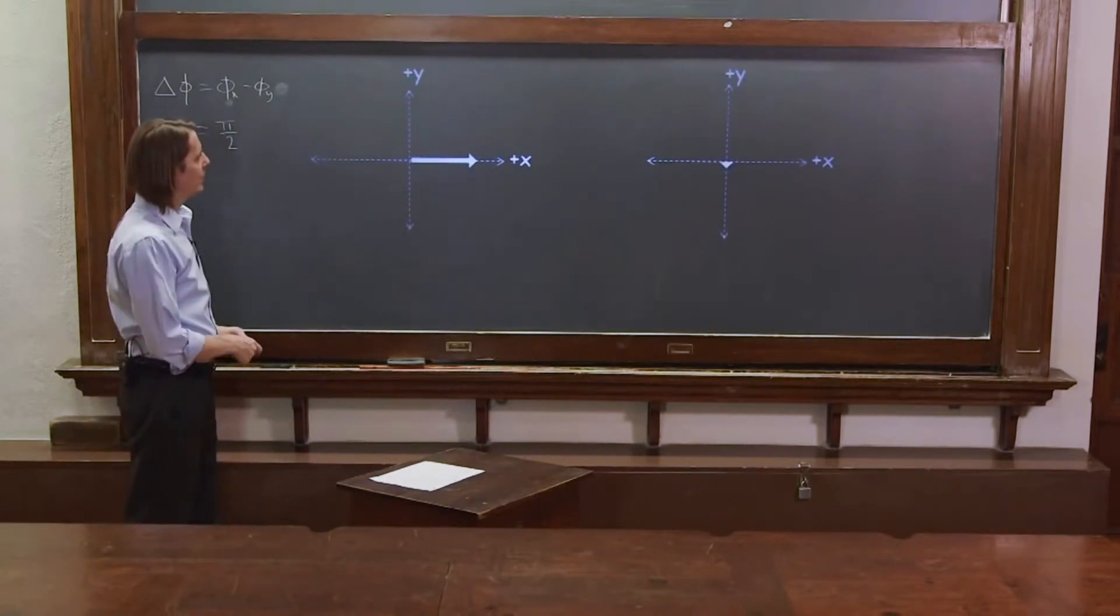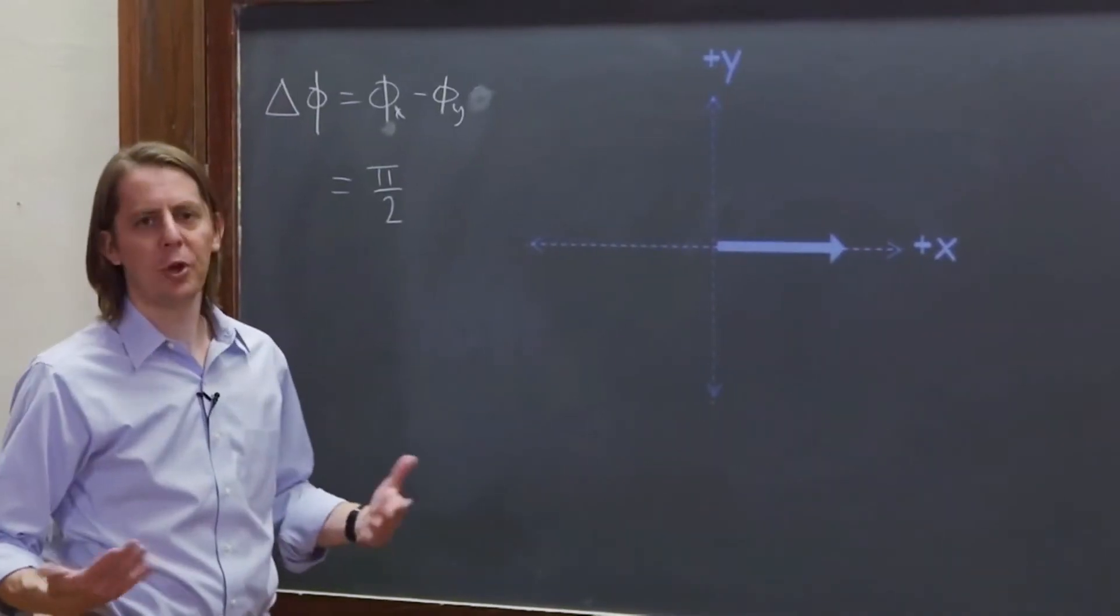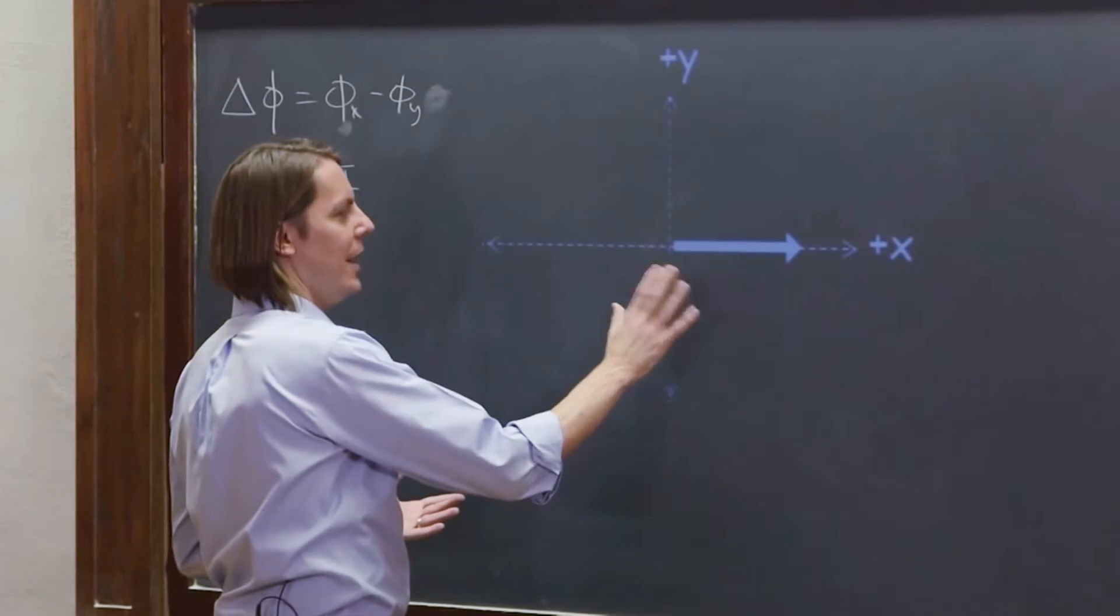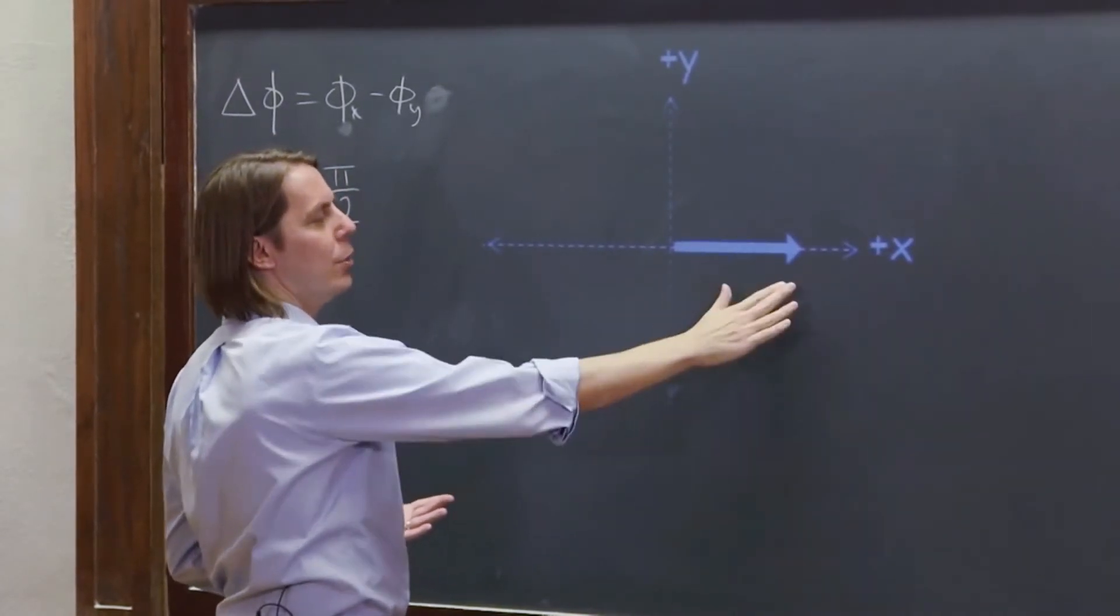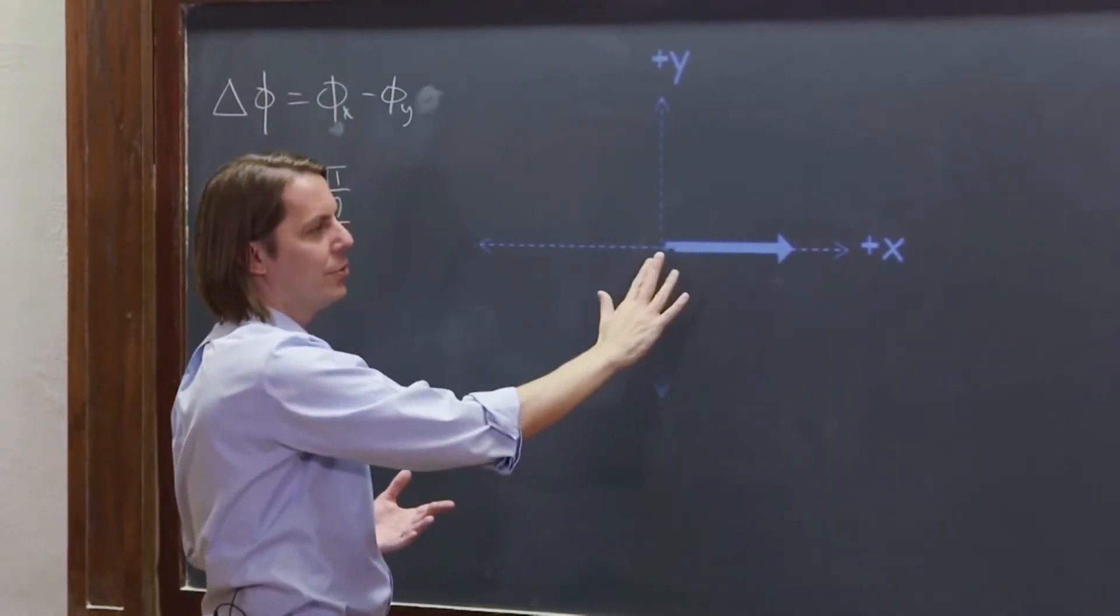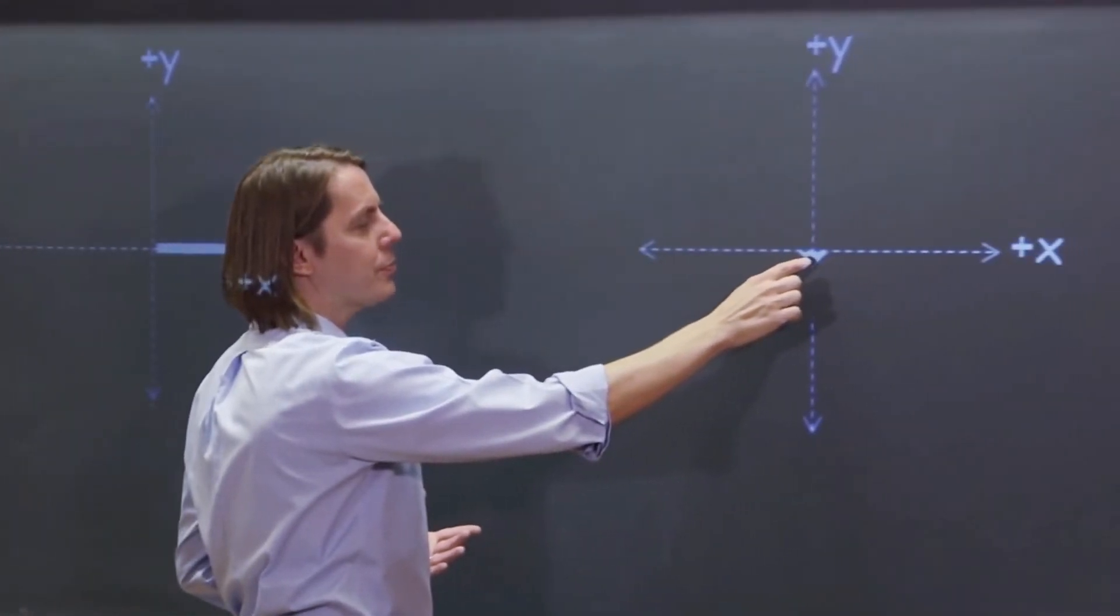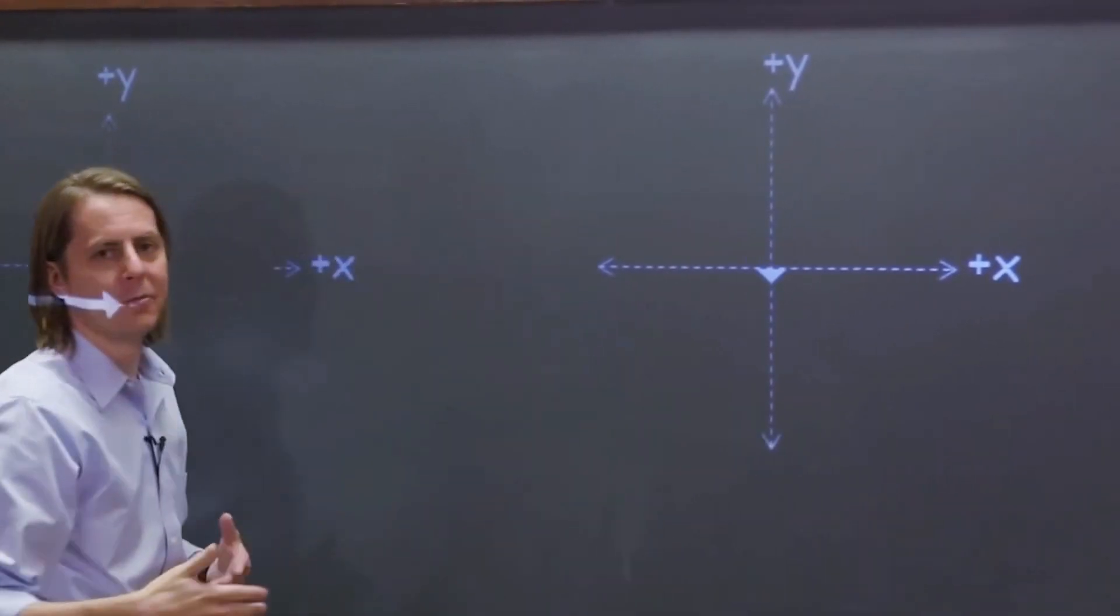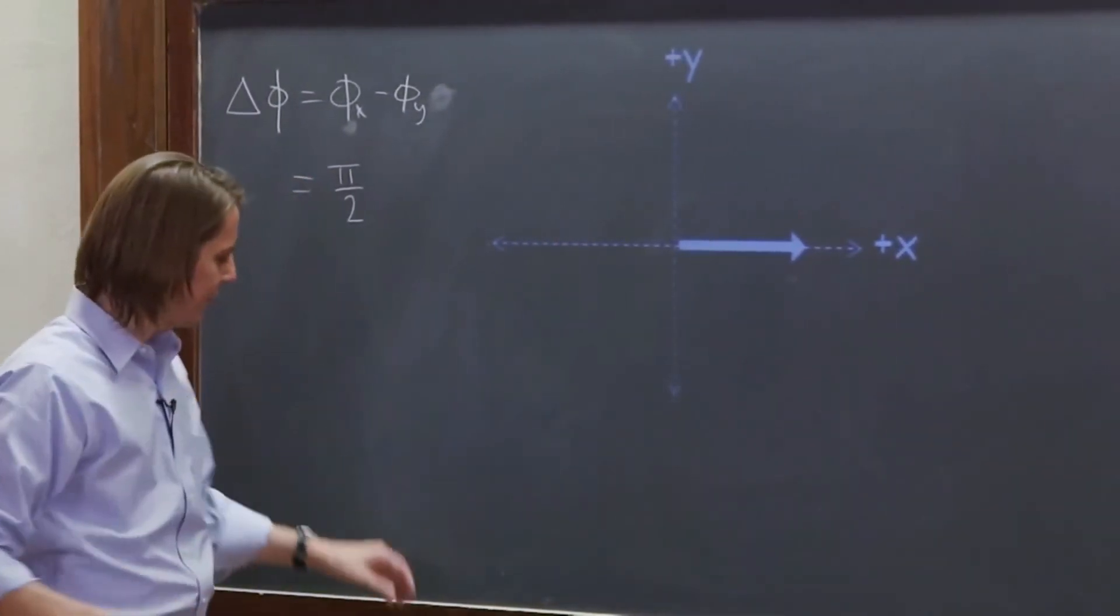That would look something like this. So here, if you imagine we're using cosines to describe the plane waves, then the X component, the horizontal component, has a phase of zero, because it's a cosine with a maximum amplitude at time equals zero. So that's a zero phase cosine. And then this looks more like a sine, because it's zero at time equals zero. So this must be phase shifted from the cosine by pi over two.